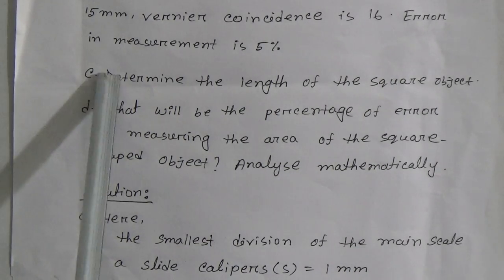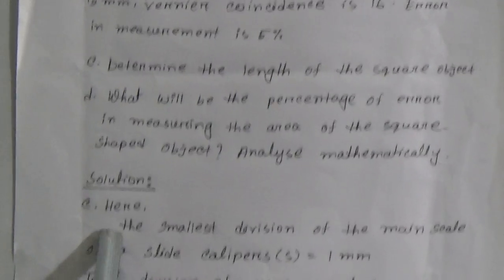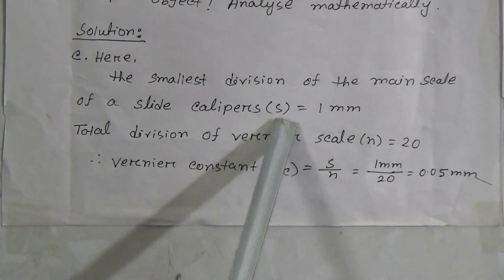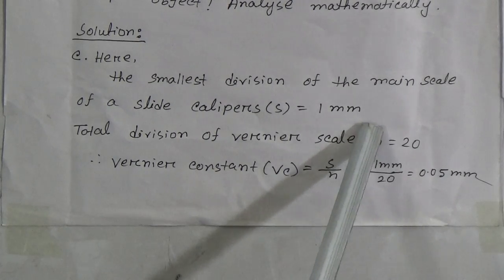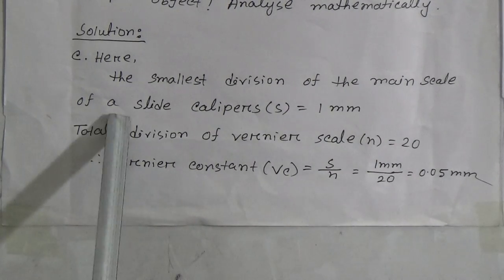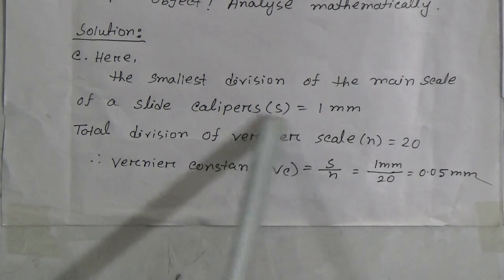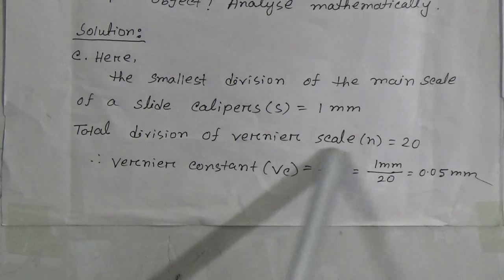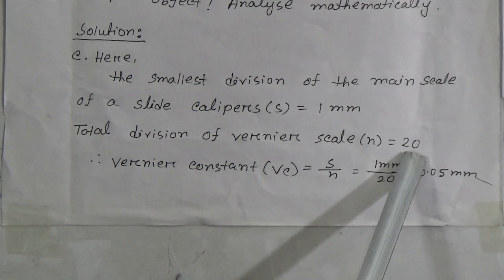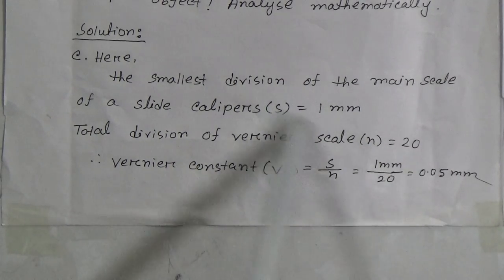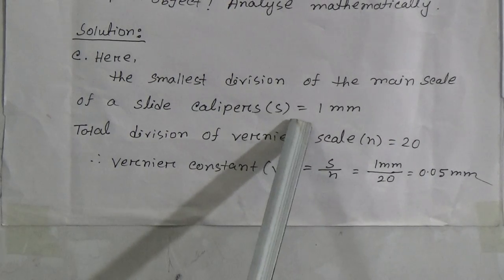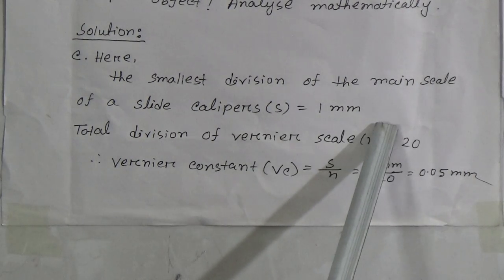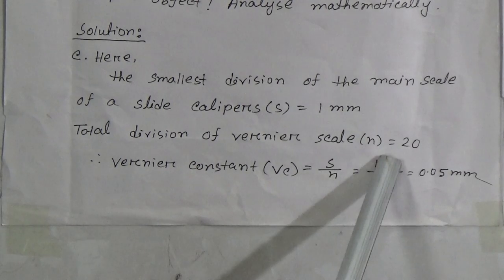Now go to the C solution. The given values are: the smallest division of the main scale of a slide calipers is denoted by S equal to 1 millimeter. Total divisions of the Vernier scale is denoted by N equal to 20.